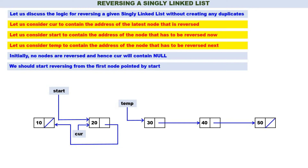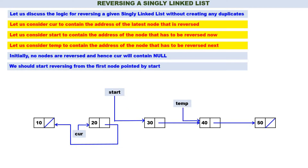Next, what is the node that we have to reverse? 30. Therefore start should contain the address of 30 — that is, start is equal to temp. Now we have to reverse 30. What is the next node to reverse? 40. Therefore temp should contain the address of 40 — temp is equal to start->next. Let us reverse 30: start->next is equal to curr. 30 is also reversed. The node reversed recently is 30, so curr should contain the address of 30 — curr is equal to start.